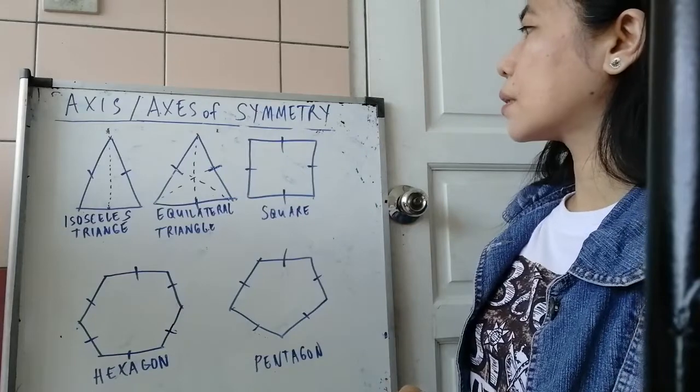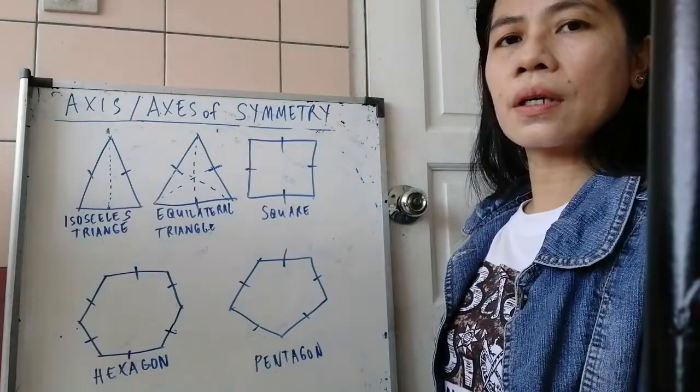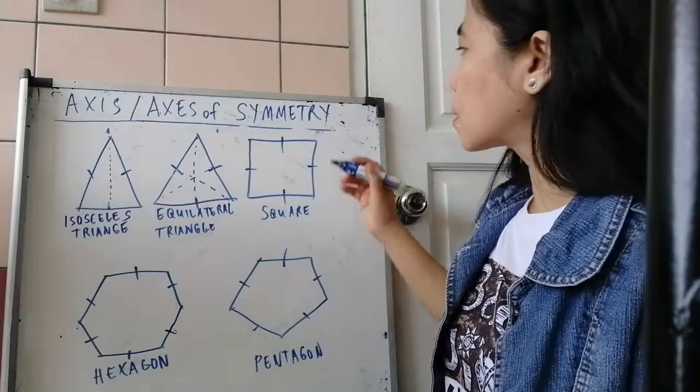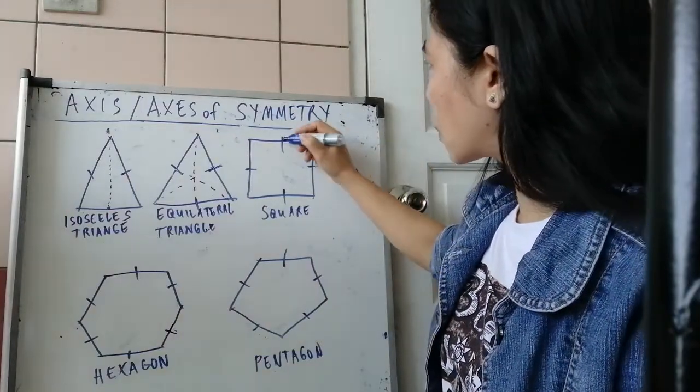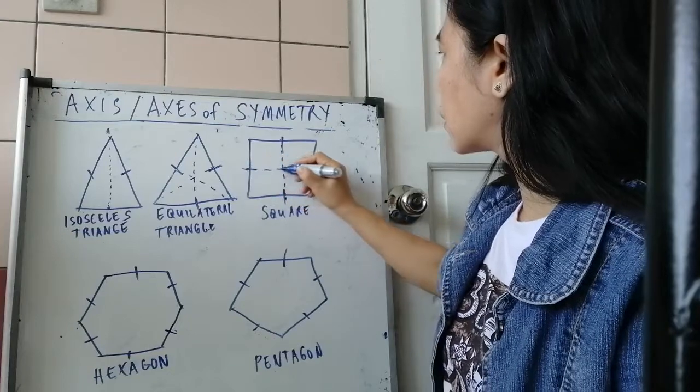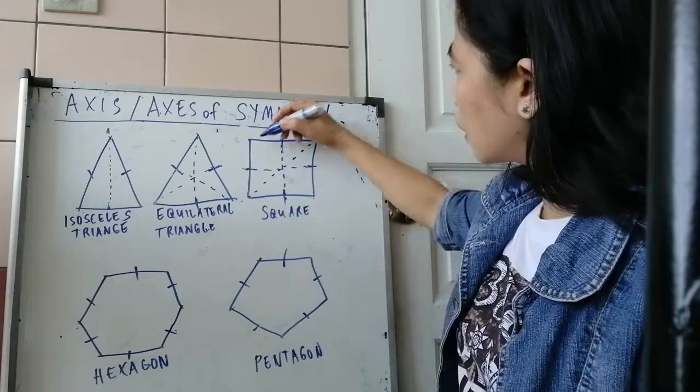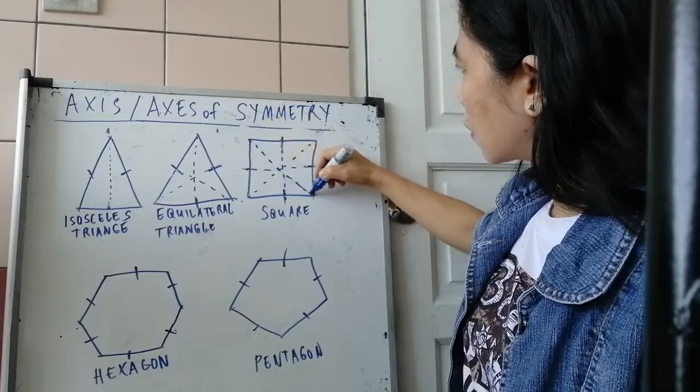So it has three axes of symmetry. For the square, it has four equal sides, so we can divide it into four. One, two, three, four.